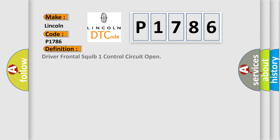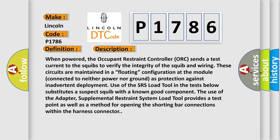The basic definition is: Driver frontal squib one control circuit open. When powered, the occupant restraint controller (ORC) sends a test current to the squibs to verify the integrity of the squib and wiring. These circuits are maintained in a floating configuration at the module, connected to neither power nor ground, as protection against inadvertent deployment. Use of the SRS load tool in the tests below substitutes a suspect squib with a known good component. The use of the adapter, supplemental restraint system load tool, provides a test point as well as a method for opening the shorting bar connections within the harness connector. This diagnostic error occurs most often in these cases.